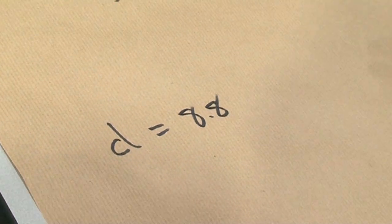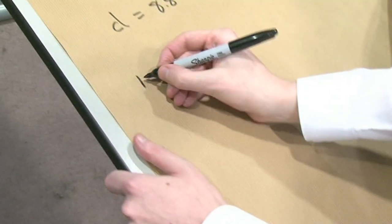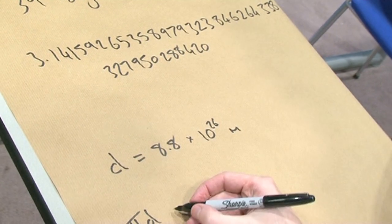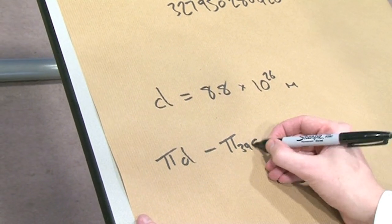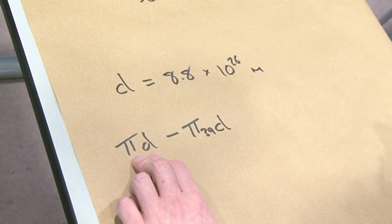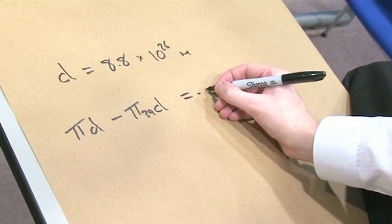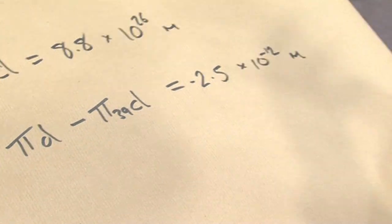Wolfram Alpha told me that the diameter of the universe was 8.8 times 10 to the 26 metres. That's the diameter of the observable universe. If we want to work out the circumference, we times it by pi — so the circumference would be pi times the diameter. What's the difference when I take away my truncated pi? What if I took away my pi with 39 digits — I've called it pi-39 — and did the same thing, times by d? So that's the real circumference of the universe take away my approximation. The difference I got was about 2.5 times 10 to the minus 12 metres.